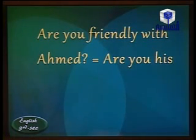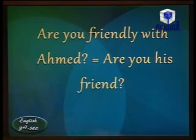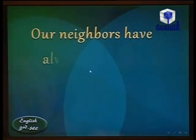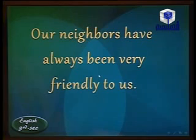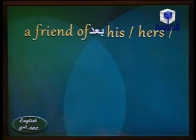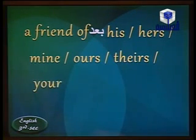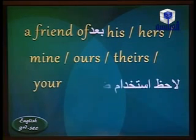'Are you friendly with Amalia?' means are you her friend? For example: 'Our neighbors have always been very friendly to us' — meaning they are neighborly. Also remember: 'a friend of' is followed by a possessive pronoun: his, hers, mine, ours, theirs, yours — not an object pronoun.